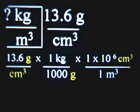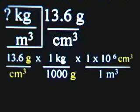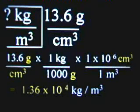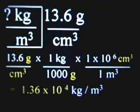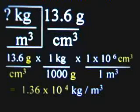And if we now do the math — take the 13.6 and multiply it by one, then divide by 1,000, then multiply it by one million (1 × 10⁶), and divide by one — the final answer, rounded to three significant figures because 13.6 had three significant figures, is 1.36 × 10⁴ kilograms per meter cubed. This answer is also, if you were to write it out, 13,600.